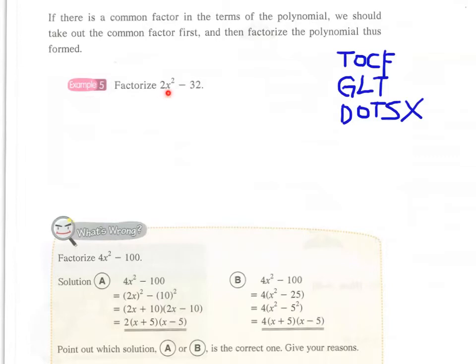It happens that we have a common factor of 2 here. Therefore, we can take the 2 out and then we have 2(x² - 16). And now we have the form of difference of two squares: x² - 16.